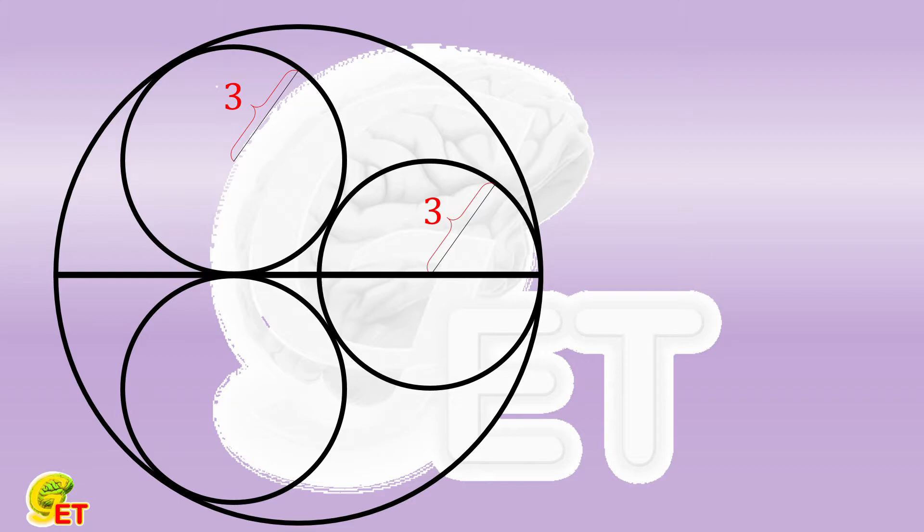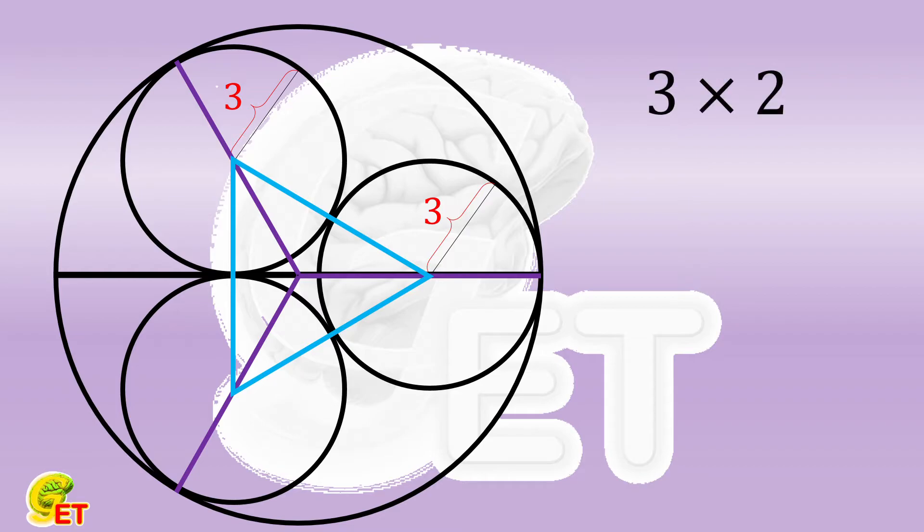The straight line passing through the centers of both the large and small circles must pass their tangent points. The straight line passing through the center of each two small circles must also pass through their tangent point. So we get an equilateral triangle with side length twice as long as the radius of the small circle.